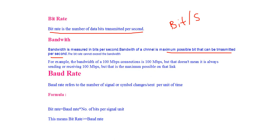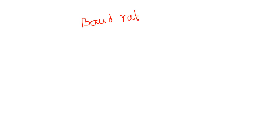There is a relation between bit rate and baud rate: bit rate is equal to baud rate multiplied by the number of bits per signal unit, which means bit rate is greater than or equal to baud rate. To understand this relation, suppose baud rate is 4 baud per second, meaning 4 signal changes per second.